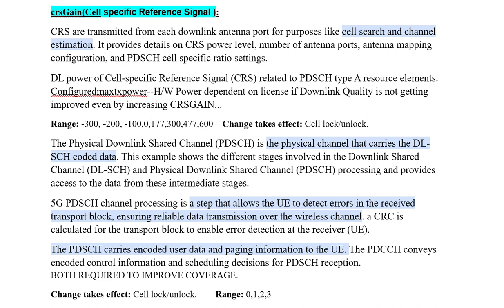This step allows the UE to detect errors in the received transport block, ensuring reliable data transmission over the wireless channel. CRC enables error detection at the receiver UE. The PDSCH carries encoded user data and mapping information to the UE, including control information. Both PDSCH and CRS are used together for coverage improvement.